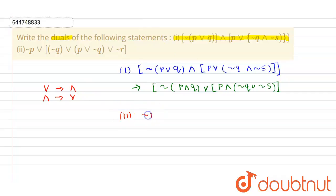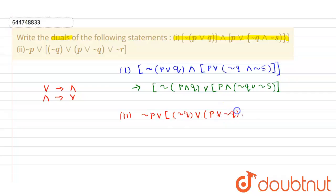Statement two is: negation of p, or in bracket, negation of q, or p, or negation of q, or negation of r. This is our statement two, and we need to find its dual.